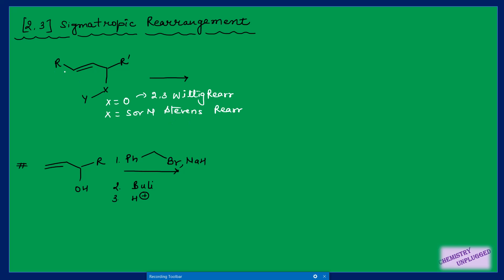We number the system one, two, three on the allylic side and one, two on the other. Y has a lone pair of electrons or can be negatively charged — it attacks on this carbon, the bond shifts, and the last arrow ends on X, similar to other sigmatropic rearrangements. This involves formation of a five-membered transition state, which forms an envelope-like structure.